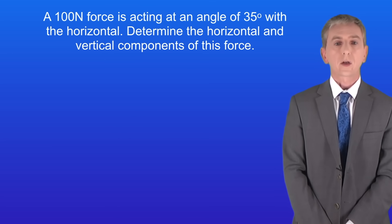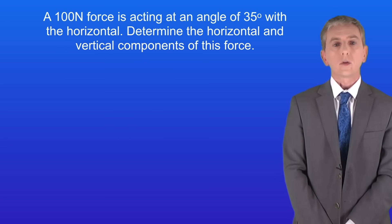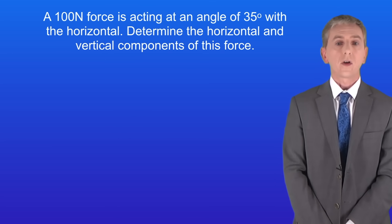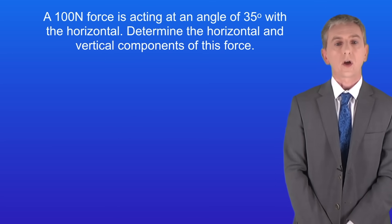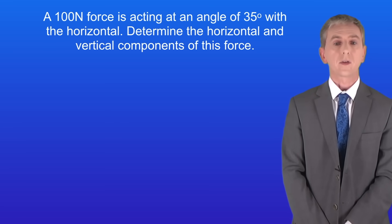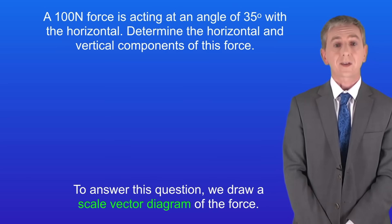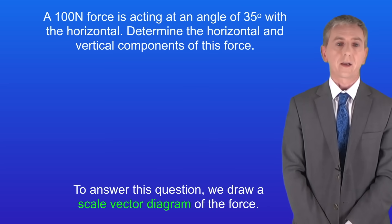Here's a typical question. A 100 newton force is acting at an angle of 35 degrees with the horizontal. Determine the horizontal and vertical components of this force. To answer this question we draw a scale vector diagram of the force.